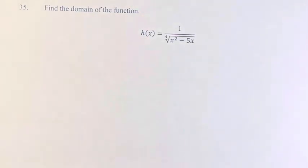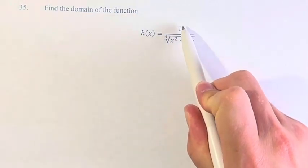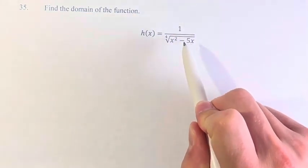Hello, and welcome back to another video. In this problem, we're looking to find the domain of the function h of x is equal to 1 over the fourth root of x squared minus 5x.